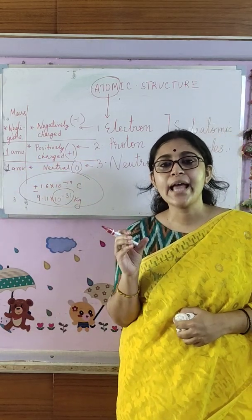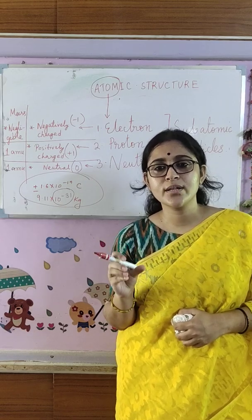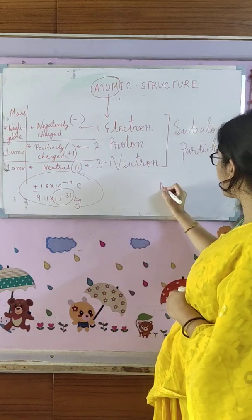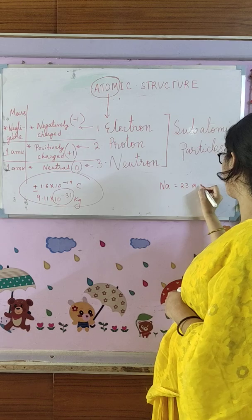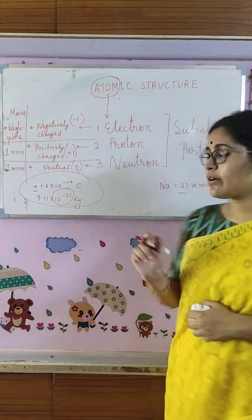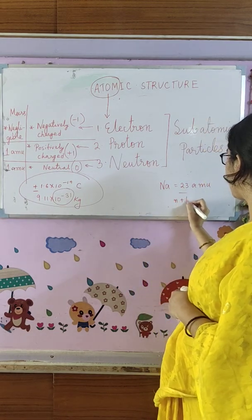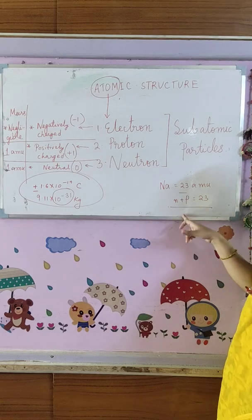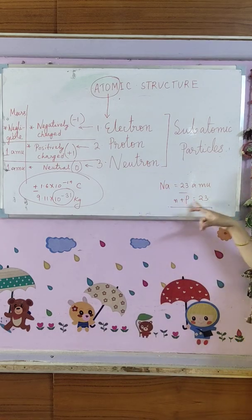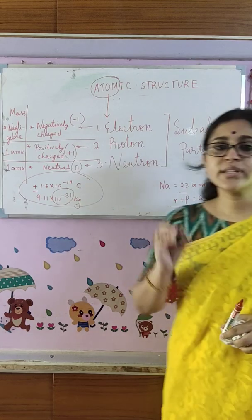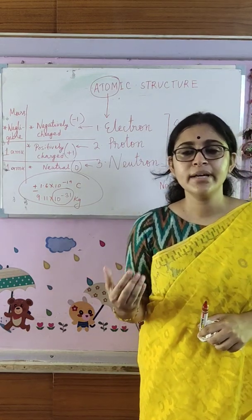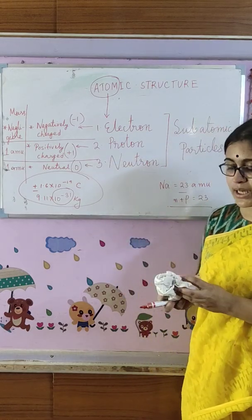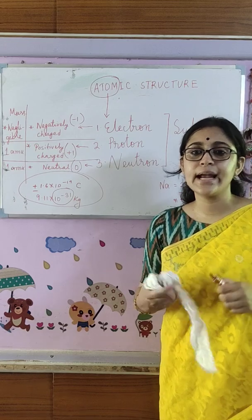So the mass of an atom is the total number of protons and neutrons present in it. For example, the mass of sodium (Na) is 23 AMU. That means the total number of neutrons and protons (N + P) is equal to 23. The total number of neutrons and protons present inside a sodium atom is 23. This is the main thing we should know about the atom and its sub-atomic particles. Next, we will come to the location of the sub-atomic particles inside the atom.